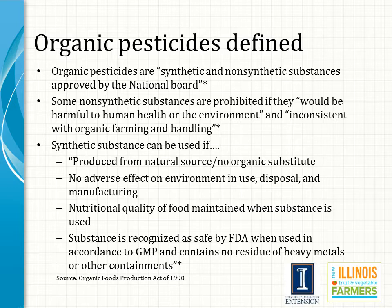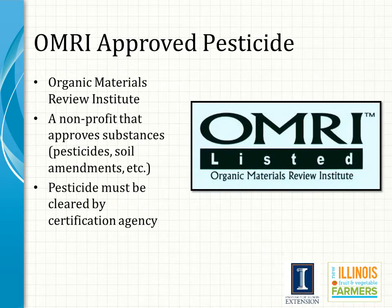It is important to note that some non-synthetic substances are not allowed within organic production — those which would be harmful to human health and/or the environment, or may not follow the organic standards and practices that are in place. If a synthetic product is allowed for organic production, it must abide by these rules: it is produced from a naturally occurring source, or there is no organic substitute; it has no adverse effect on the environment in use, disposal, and manufacturing; nutritional quality must not be adversely affected; and it must be recognized as safe by the FDA, with no residue of heavy metals or other contaminants.